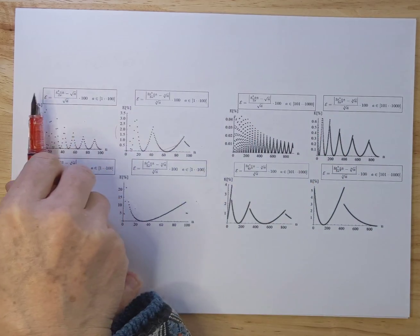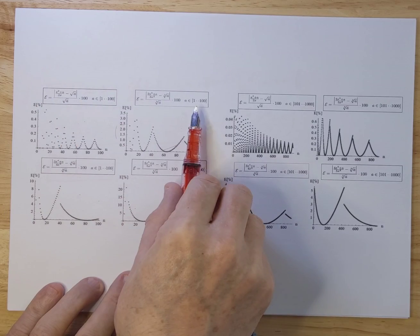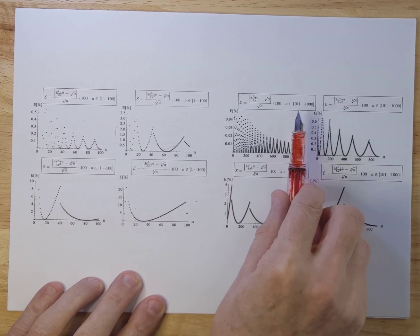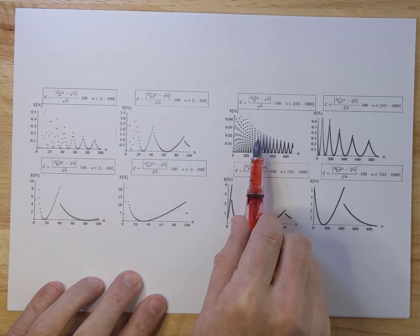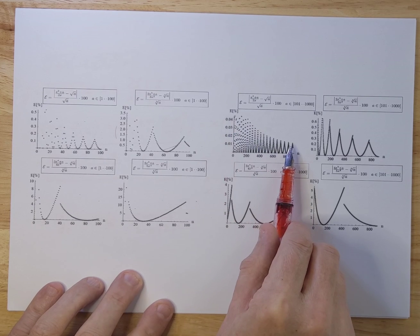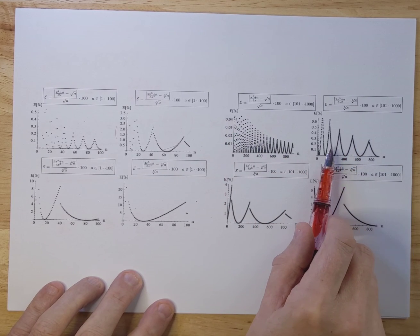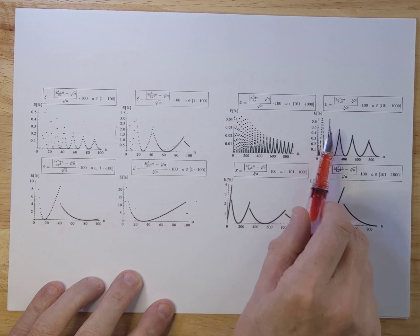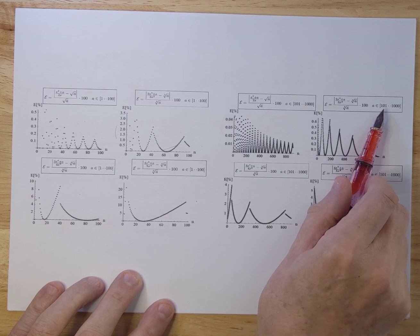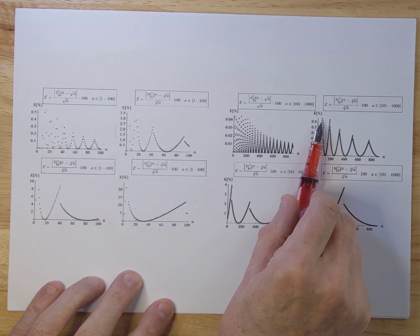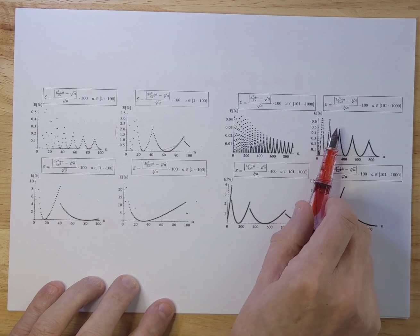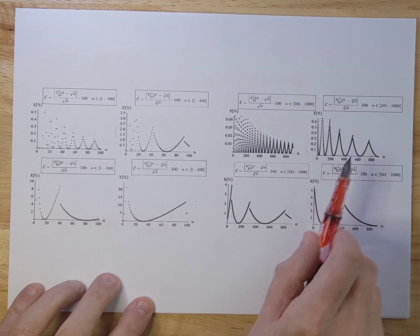So this checks numbers between 1 and 100. This checks numbers between 101 and 1,000. For the square route, you can already see the numbers are really accurate. For cube routes, the numbers are below a percent. So that's pretty good. If you go above 100, you see that errors are below 1%. So up to two decimal places accurate.